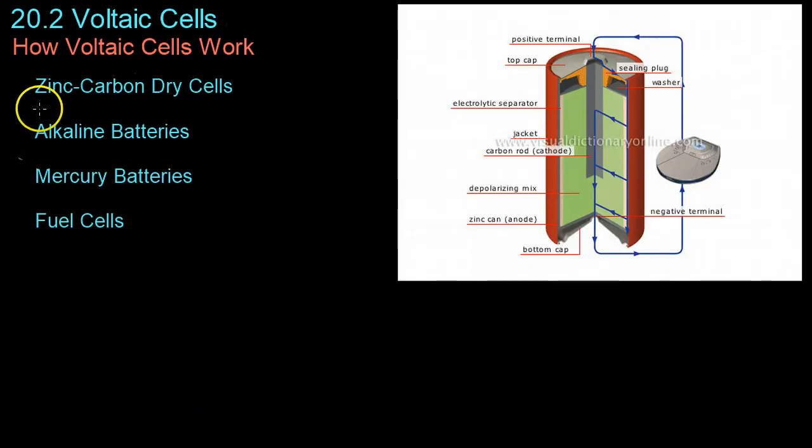The first type of battery are zinc-carbon dry cells. These are the typical big D batteries you put in a large flashlight. These use, as you could guess from the name, zinc and carbon. The whole zinc jacket acts as the anode.